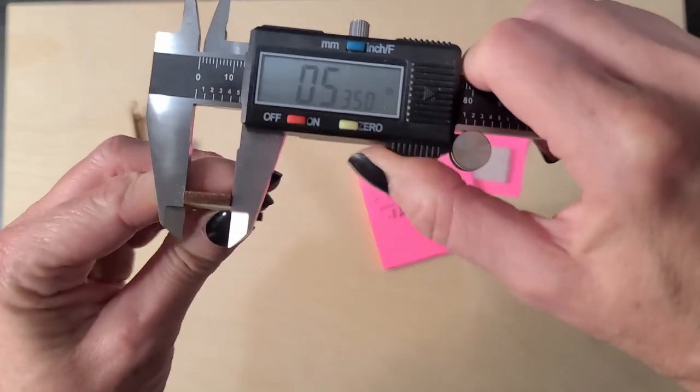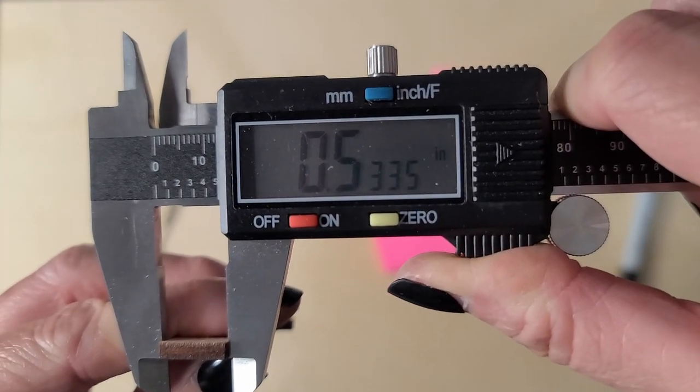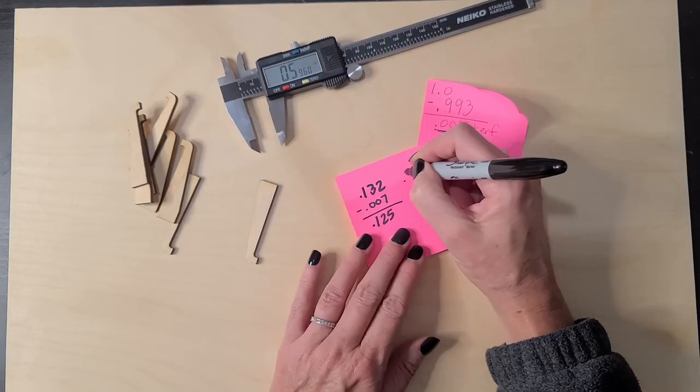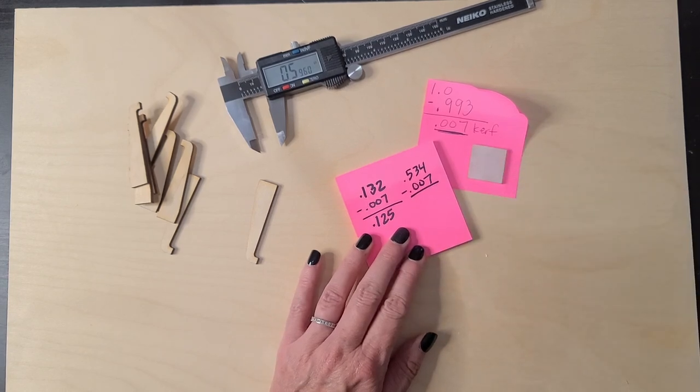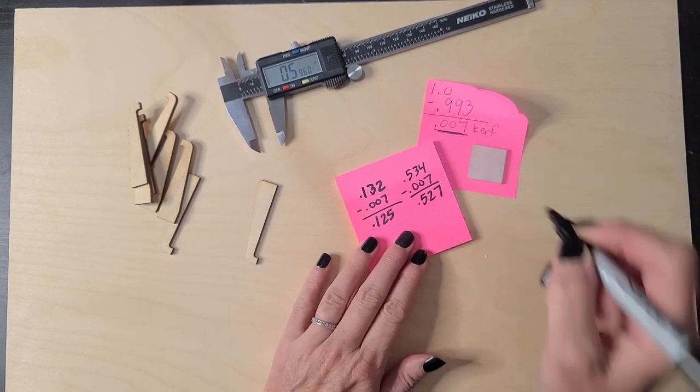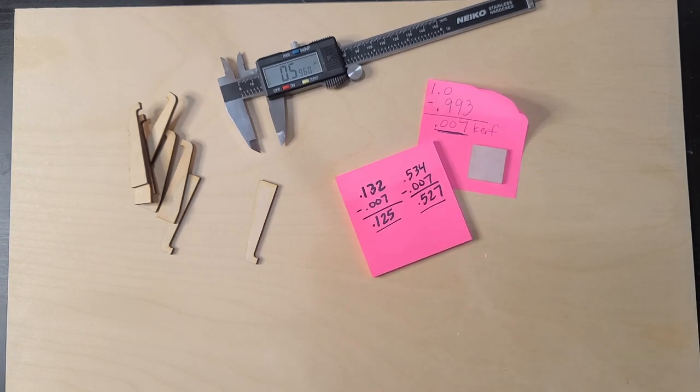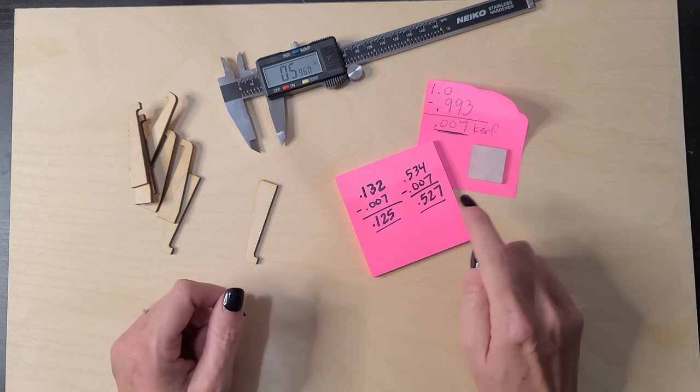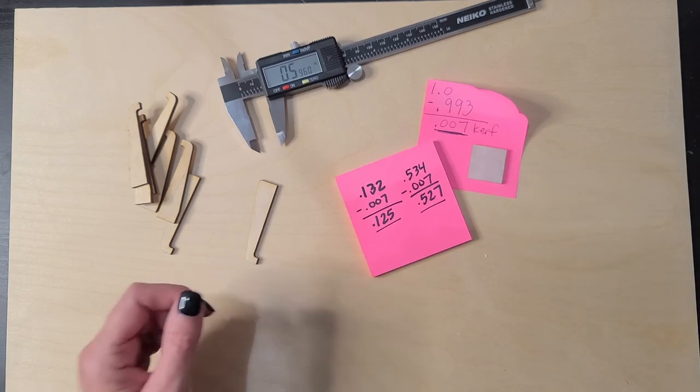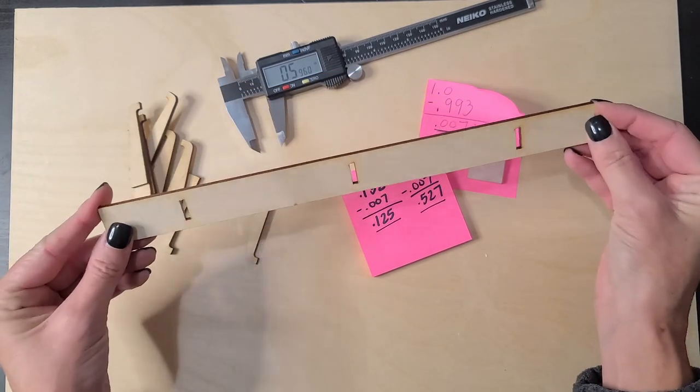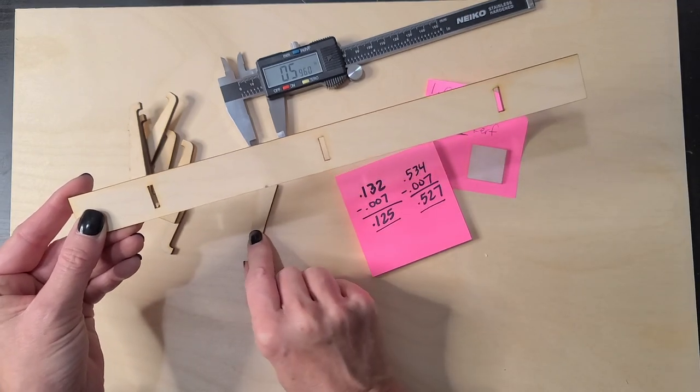Now I also need to measure this way and see what that side is going to have to be of the slot. So that is 0.534. We'll say 0.534 minus my kerf. Let me cheat with my calculator. 0.527. All right, so these are the two numbers that I'm going to need in the Glowforge software. So let me show you how I'll adjust the file with these two numbers before I cut this. I'll be cutting this piece again, but I'm going to have these slots so that they measure the right way and these arms fit in them.